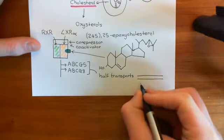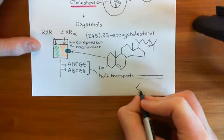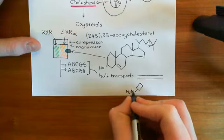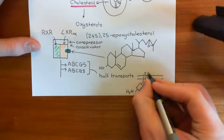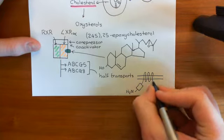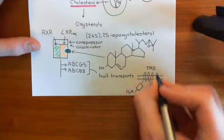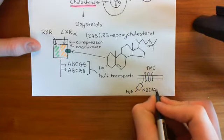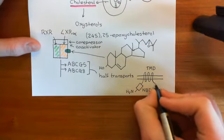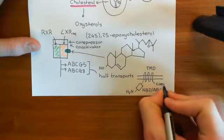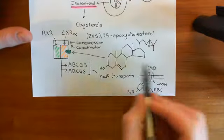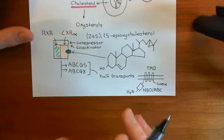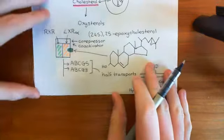Let me draw what these half-transporters look like. They have a single nucleotide binding domain at their amino terminus — the ATP binding cassette — followed by a cluster of six membrane-spanning alpha helices making up their single transmembrane domain, and then the carboxylic acid terminus. You need to dimerize these together to make a functional transporter, and when they dimerize, they transport cholesterol out of the cell.